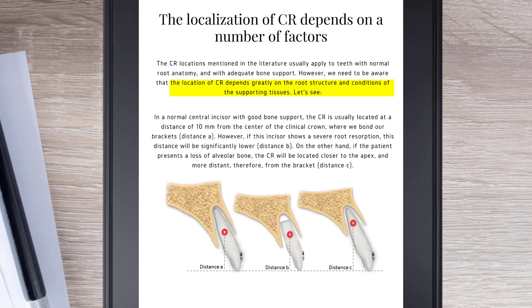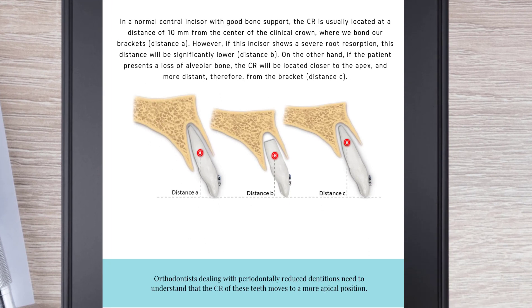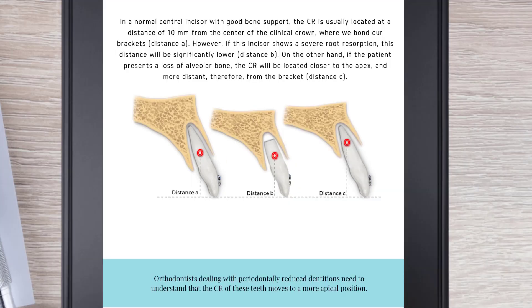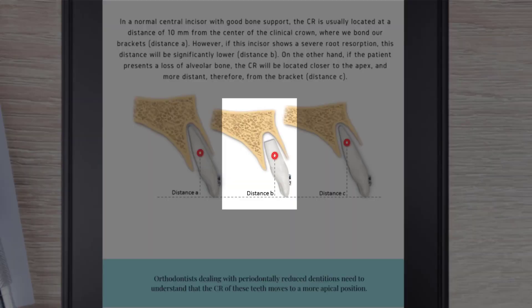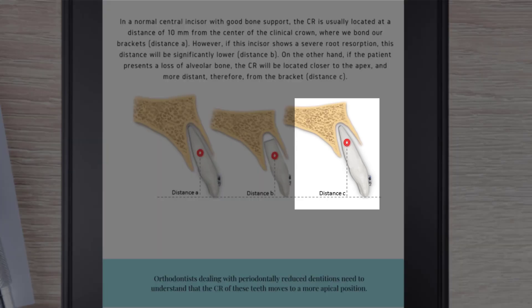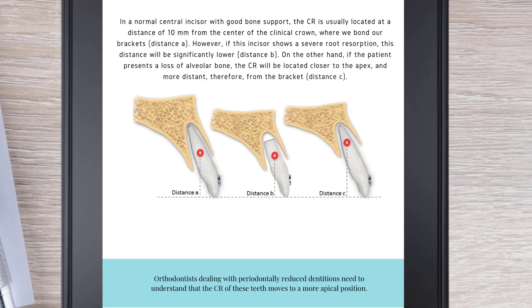For example, in a normal central incisor with good bone support, the CR is usually located at a distance of 10 mm from the center of the clinical crown, where we bond our brackets. However, if the incisor shows severe root resorption, this distance will be significantly lower. On the other hand, if the patient presents a loss of alveolar bone, the CR will be located closer to the apex and more distant, therefore, from the bracket.